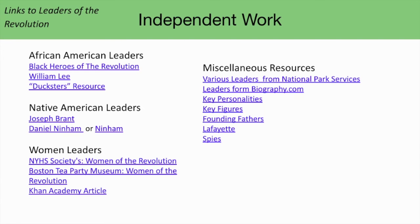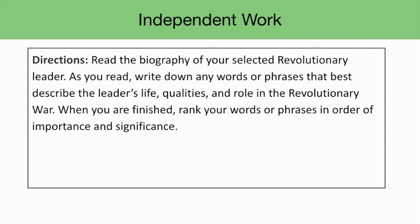Here we have the links to Leaders of the Revolution. Encourage students to browse through the different websites to find a person to read about. Alternatively, you can assign specific leaders to students. We'll ask students to read the biography of their selected revolutionary leader. As they read, they'll write down any words or phrases that best describe the leader's life, qualities, and role in the Revolutionary War. When they're finished, we'll ask them to rank their words or phrases in order of importance and significance.